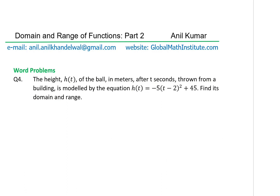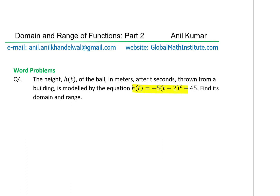These are real test questions found in test papers, so time spent understanding these concepts is worthwhile. Question 4: the height h(t) of a ball in meters after t seconds, thrown from a building, is modeled by h(t) = −5(t − 2)² + 45. Find its domain and range.